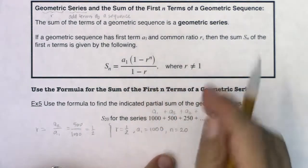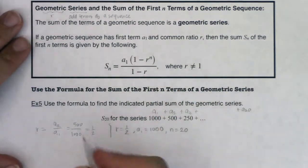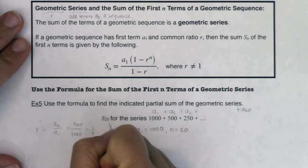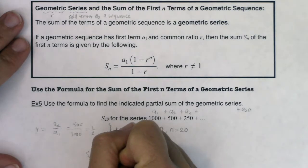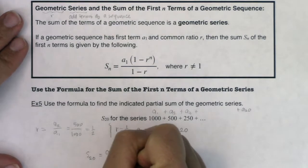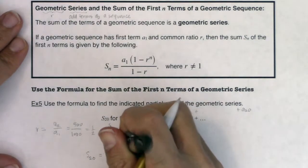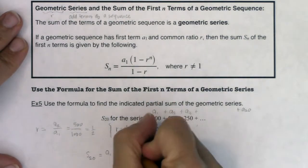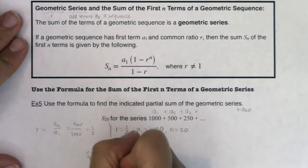I'm just going to plug it into the formula and see what pops back out. So we're going to get s of 20 should be equal to a sub 1 times 1 minus r to the, not to the n, to the 20th, in ratio to 1 minus r.